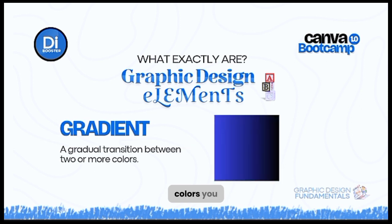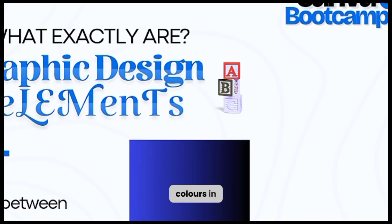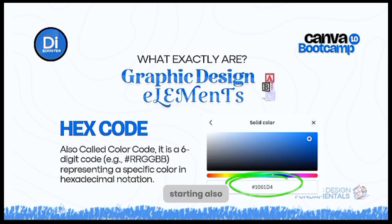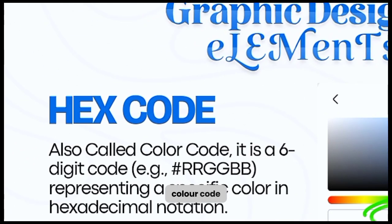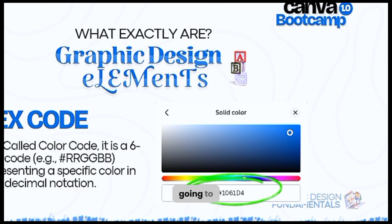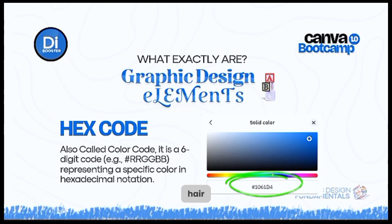A gradient combines two or more colors — you might see purple and black together, or sometimes three colors. Three colors should be the maximum; you don't want to use four. When we start practically in Canva, you'll see how to apply gradients. A hex code is a specific number representing a color. When designing, you can search for colors online and input their hex code into Canva's color field to get that exact color.